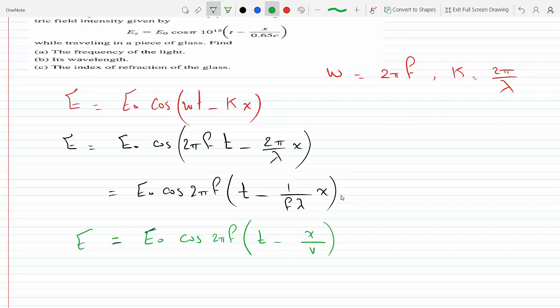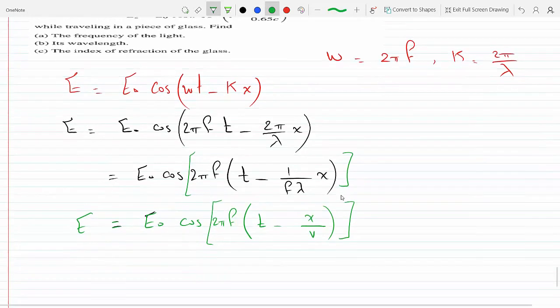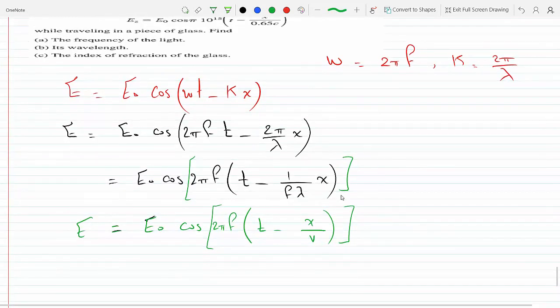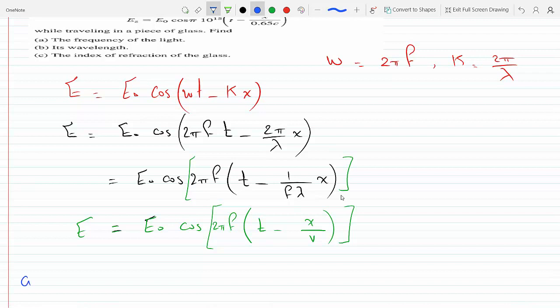Okay, let's compare and contrast that with what we have here, cosine with a bracket here. So the frequency of the light, what's multiplying t, for part a...